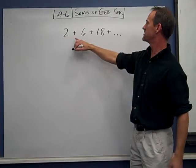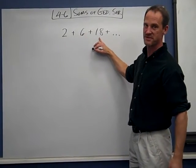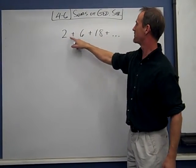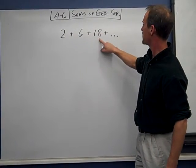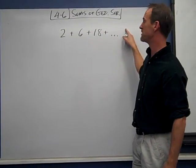This is a geometric series because you can see we're multiplying by 3 to get to 6, multiplying by 3 to get to 18. We'd be multiplying by 3 to get to the next term, which would be 54.